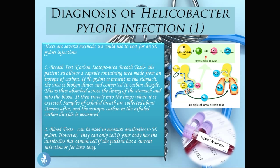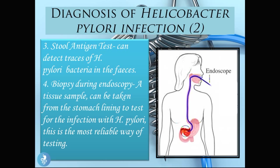Another test we can use is the blood test, where we measure the antibodies to H. pylori. However, this test can only tell us if the body has antibodies against the bacteria but cannot tell if the patient has a current infection or for how long. We could also do a stool antigen test, where a sample of the patient's stool is used to detect traces of H. pylori bacteria in the feces.